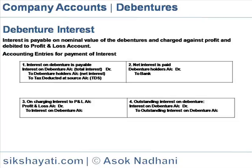On charging interest to the Profit and Loss account, the profit and loss account is debited to the interest on debentures account. If repayment is not made, the outstanding interest on debentures account is debited for the net amount.